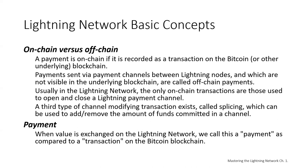On-chain versus off-chain: a payment is on-chain if it's recorded as a transaction on the Bitcoin or underlying blockchain. Payments sent via payment channels between Lightning Nodes, which are not visible in the underlying blockchain, are called off-chain payments. Usually in the Lightning Network, the only on-chain transactions are those used to open and close a Lightning payment channel. A third type of channel-modifying transaction exists called splicing, which can be used to add or remove funds committed in a Lightning channel.